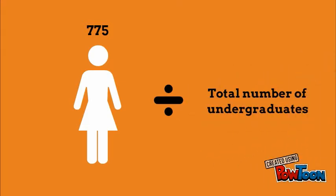So I take the number of females, 775, and divide by how many students are in the whole group. To find how many are in the whole group, we add the number of males and females.